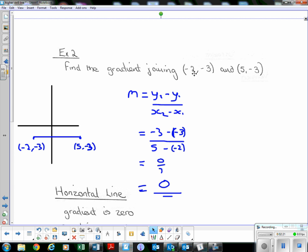Again, state the gradient formula. Substitute in. This time we get 0 over 7. Now we can divide by 7, so if I have 0 divided by 7, I get 0. So what does a gradient of 0 mean?